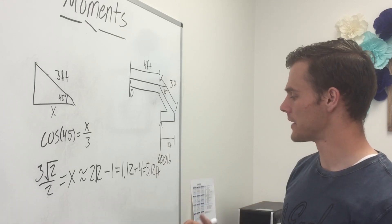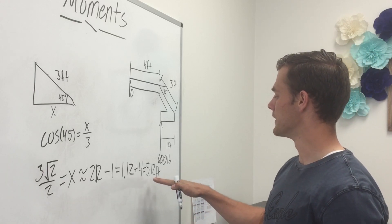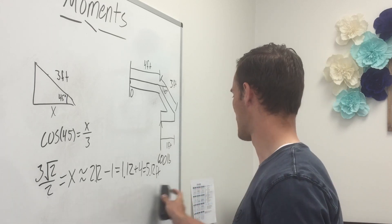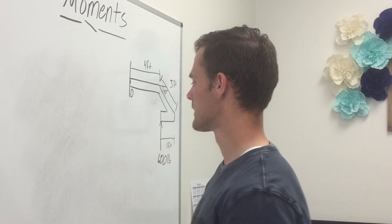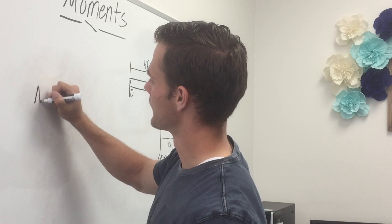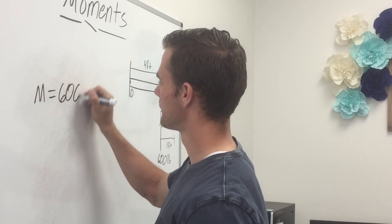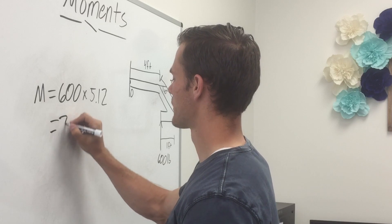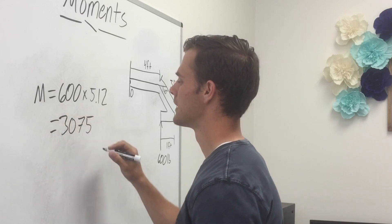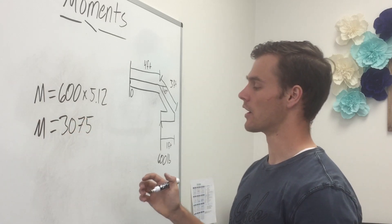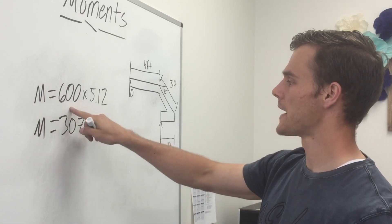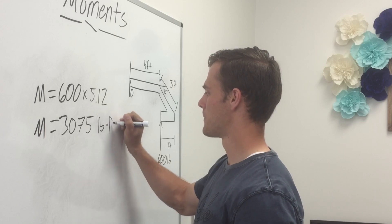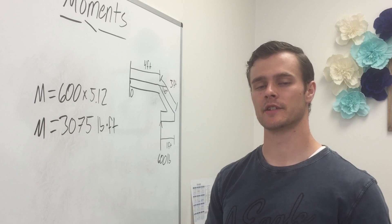So the length of our moment arm is 5.12 feet. Now we multiply the moment arm length by our force to get the magnitude of the moment: M = 600 × 5.12 = 3,075. The units are pounds times feet, so our answer is 3,075 pound-feet. That might seem like a strange unit, but those are just the units for moment or torque.